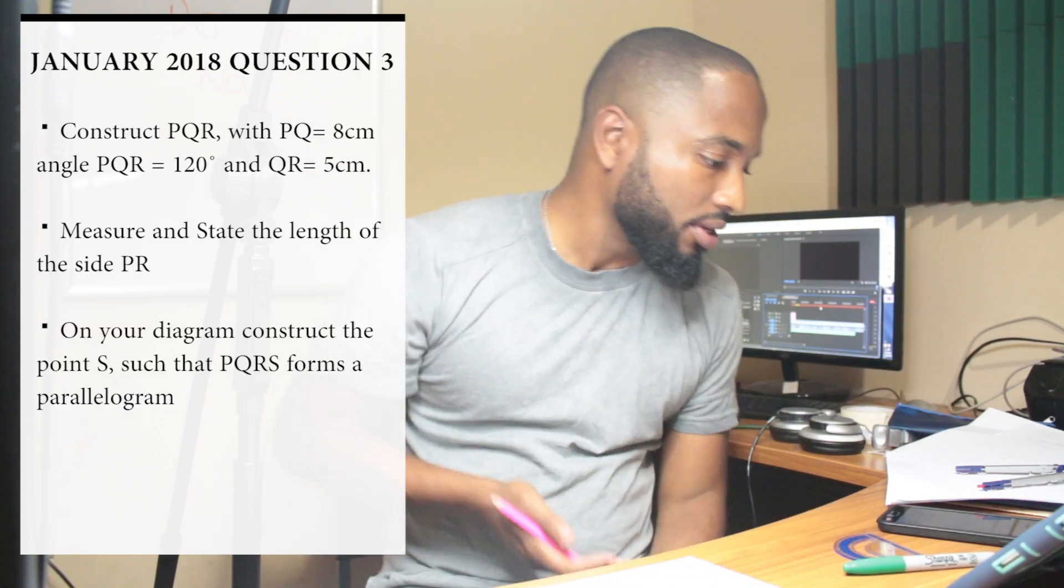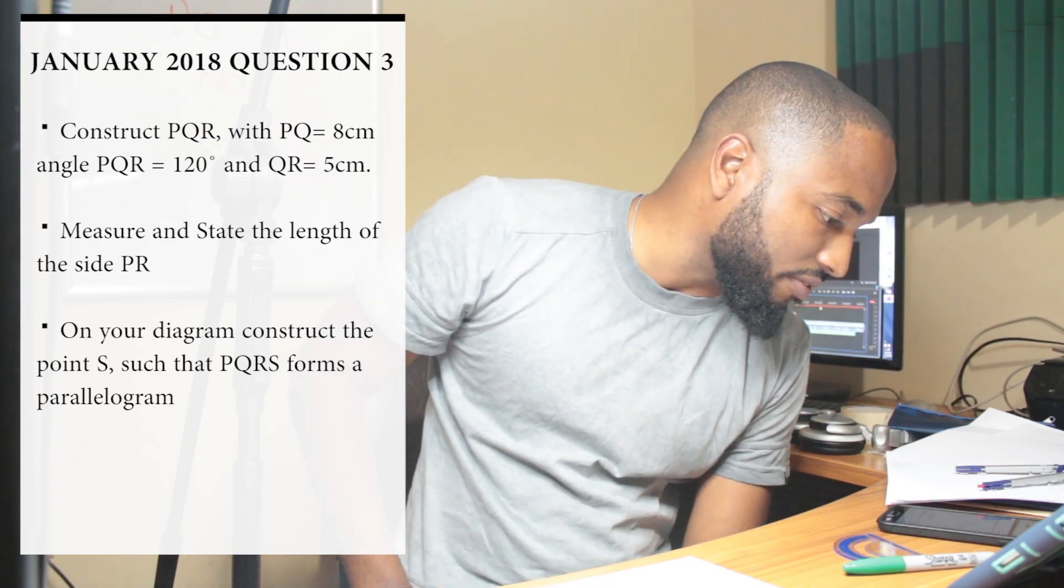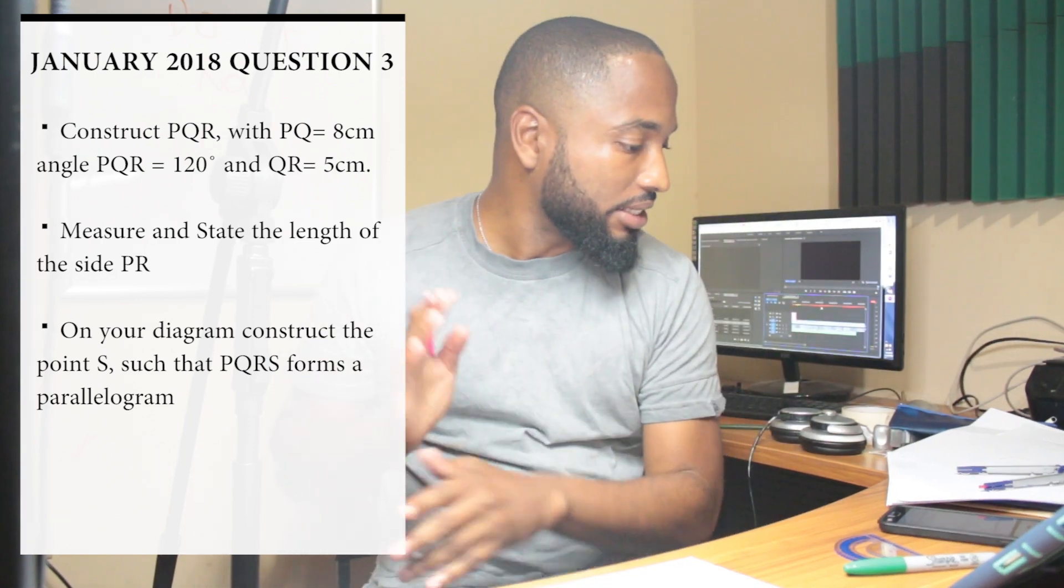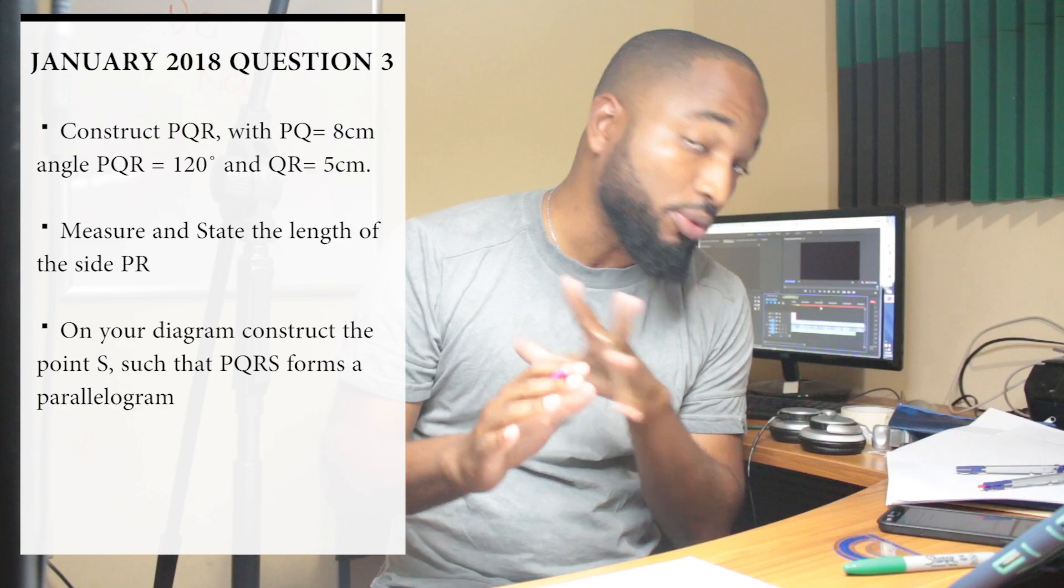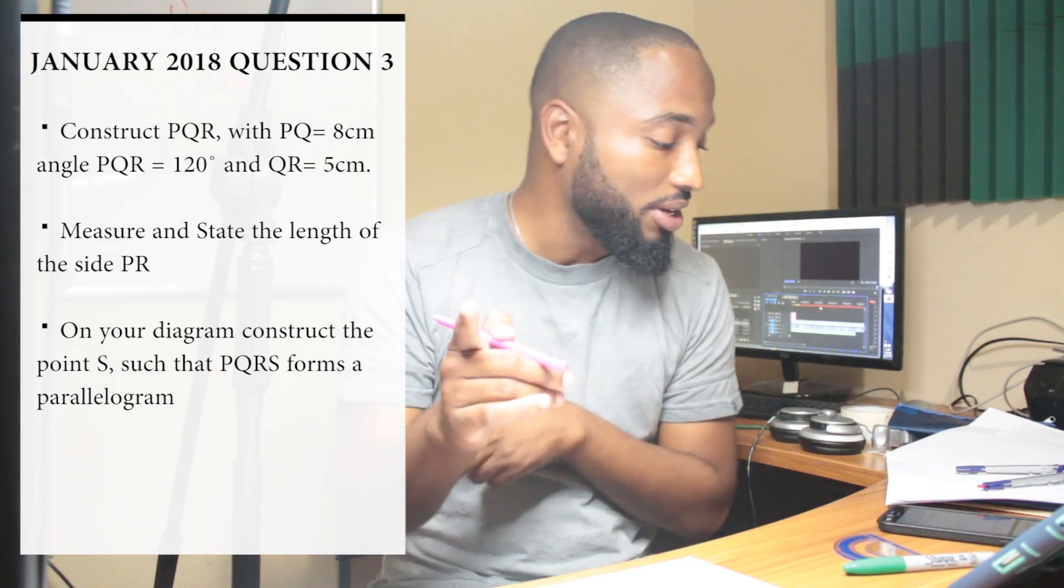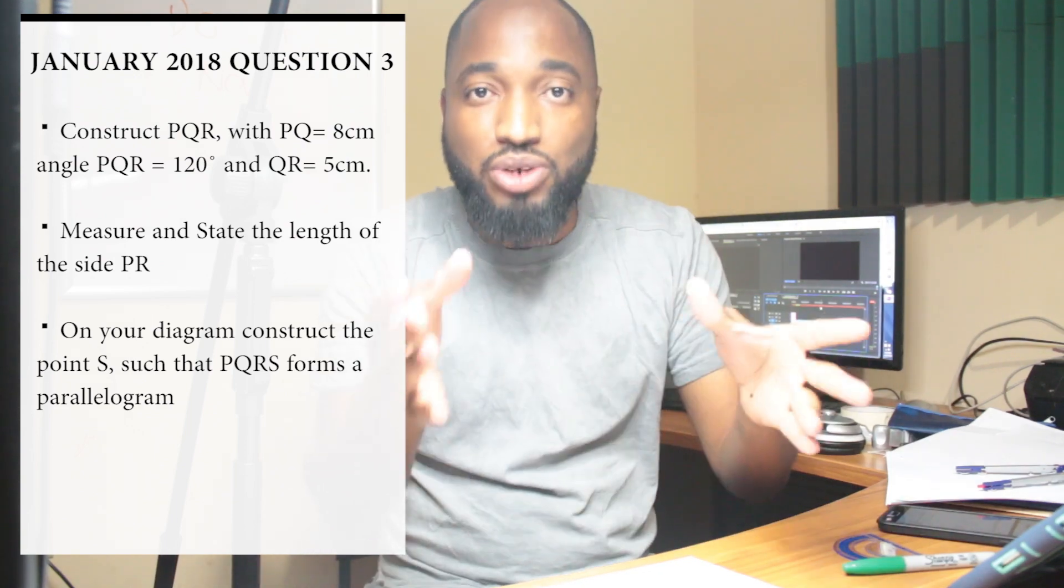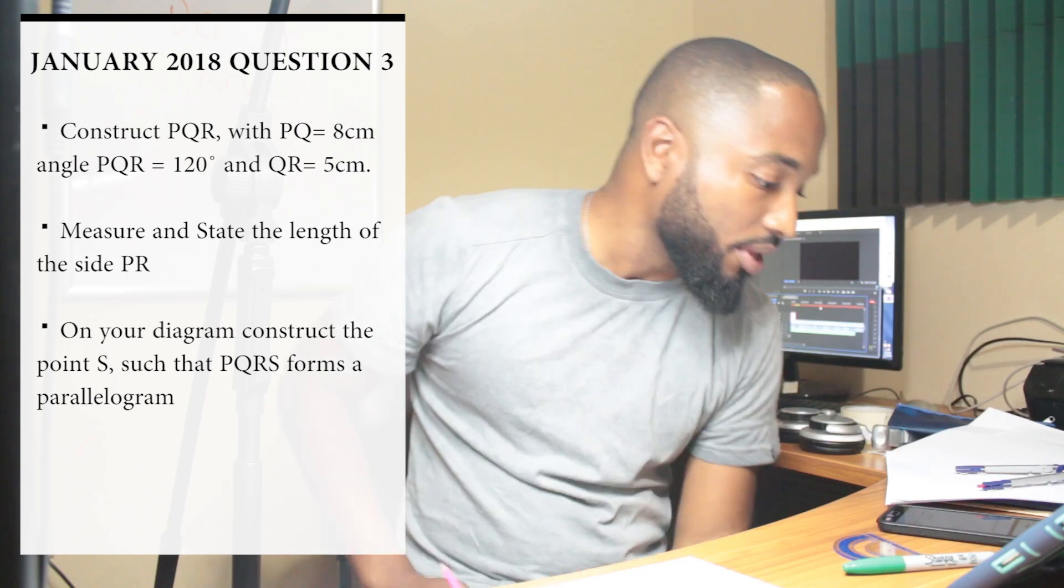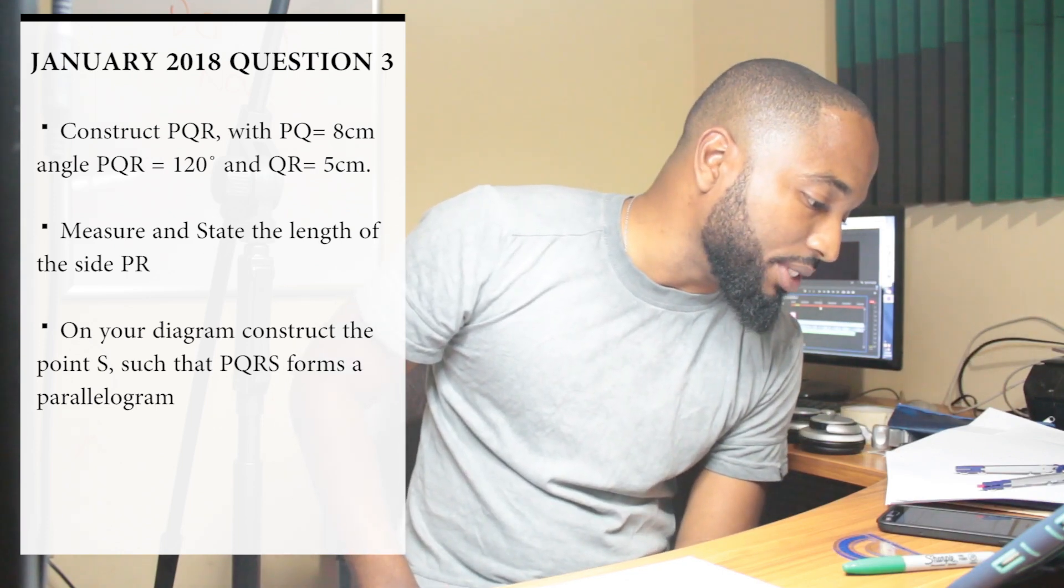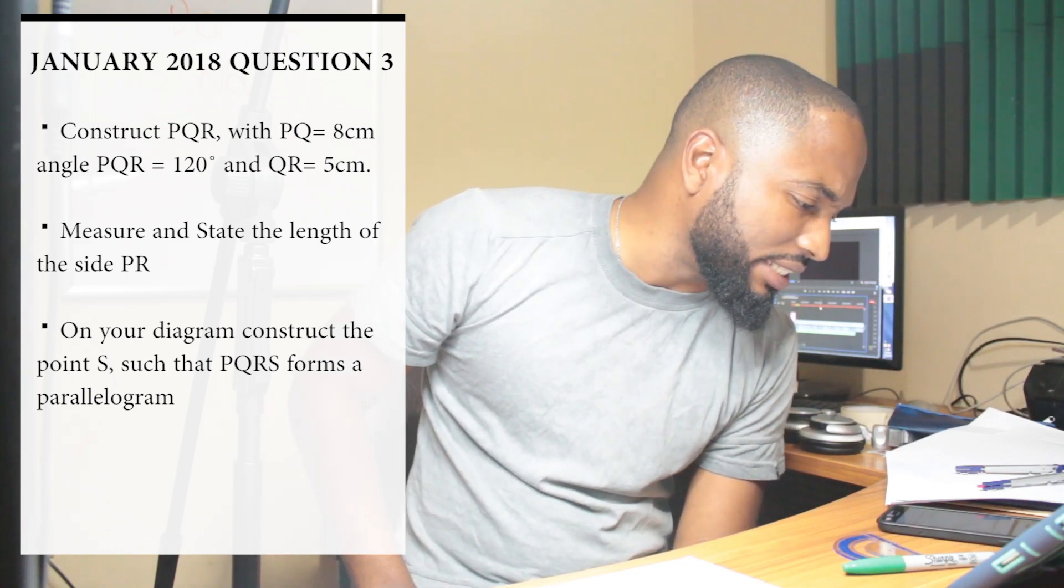Alright, this is January 2018 construction question using a ruler, pencil, and a pair of compasses. No protractor - use your protractor as a guide but don't do anything in the diagram that will show you used it. Construct triangle PQR where PQ is 8 cm, angle PQR is 120 degrees, and QR is 5 cm.